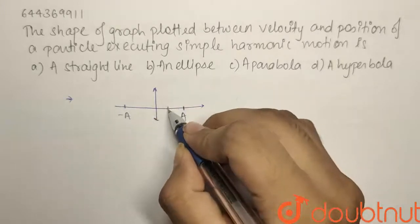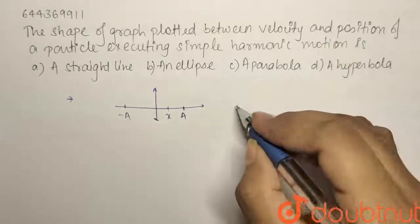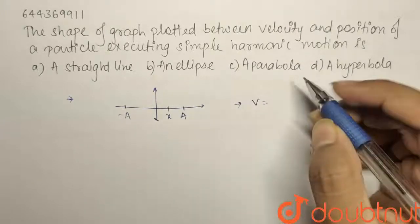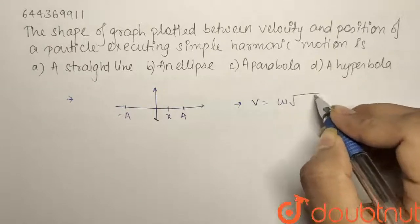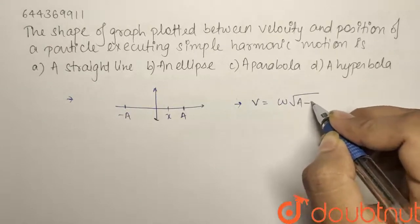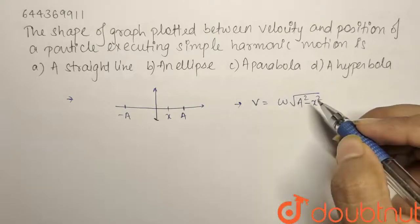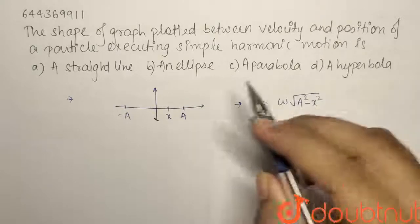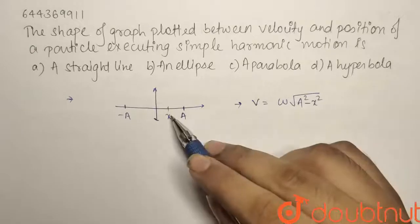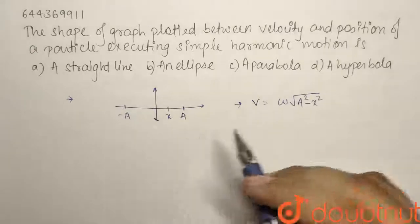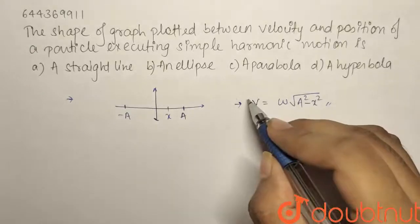So at a distance x, if you want to find out the velocity, it is given by the expression that is very useful: v = ω√(A² - x²). This is the relation we basically get by conserving energy. So this is the velocity that you can get at a position x. Now this is an important formula to remember.